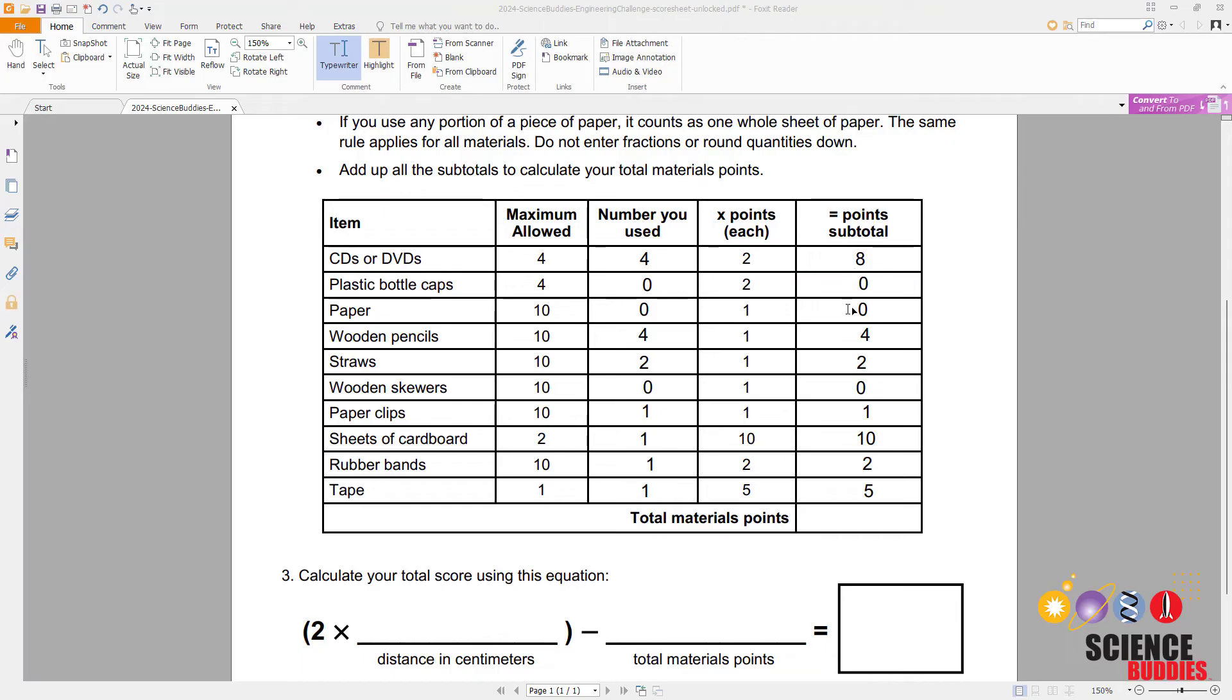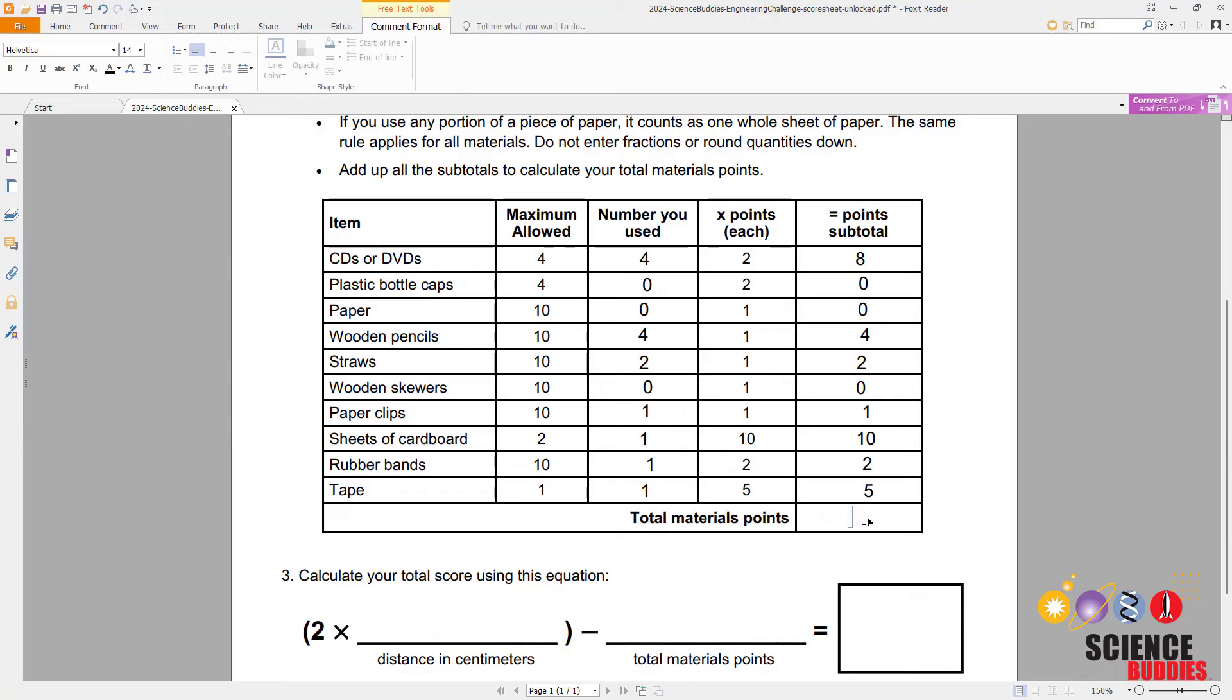You then add up all of these subtotals in this column to get your total materials points, which for this example is 32.